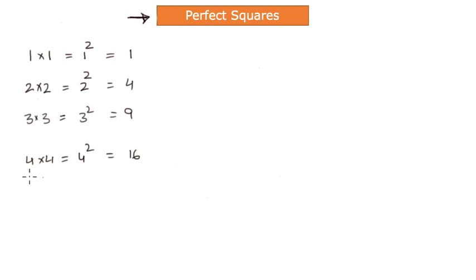What essentially you are doing is taking a number, which in this case is a natural number greater than 1, and you are squaring it. What you get as a result is a number called a perfect square. The reason it is called a perfect square is because it is obtained by squaring a natural number.